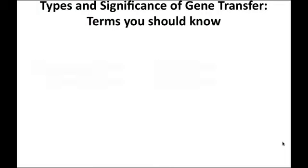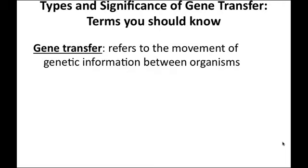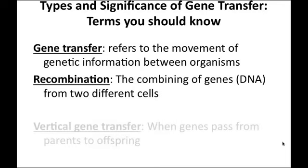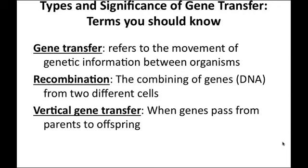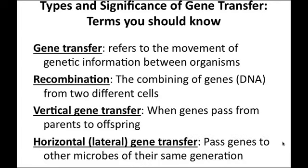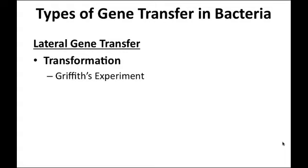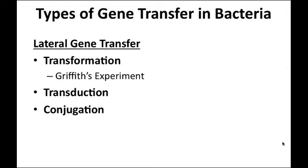Gene transfer refers to the movement of genetic information between organisms. Recombination events involve combining DNA from two different cells, adding or subtracting genetic information. Vertical gene transfer is what happens when parents pass DNA to offspring. What's happening in Griffith's experiment is horizontal or lateral gene transfer — passing genetic information between microbes of the same generation. This is exemplified by transformation, transduction, and conjugation.